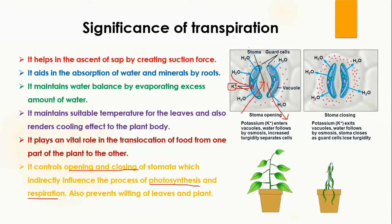Stomata close when water moves out of the guard cells. Water only moves out when potassium ions move out of the guard cells. So when potassium ions leave, water also leaves the guard cells, making the cells flaccid and causing the stomata to close.